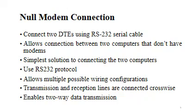Null modem connections are not standardized, allowing for multiple possible wiring configurations. In this type of connection, the transmission and reception lines are crossed. Null modem connections are made possible through the use of a null modem cable. This cable is comprised of three lines: one line serves as the signal ground, with the other two lines handling the transmitting and receiving of data. Based on the software used, some kind of authentication or handshaking may be necessary.